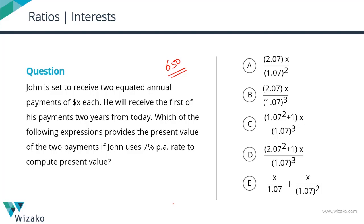We are looking at an equivalent of compound interest in the form of present value of future investments. John is said to receive two equated annual payments of X dollars each. He will receive the first of his two payments two years from today.